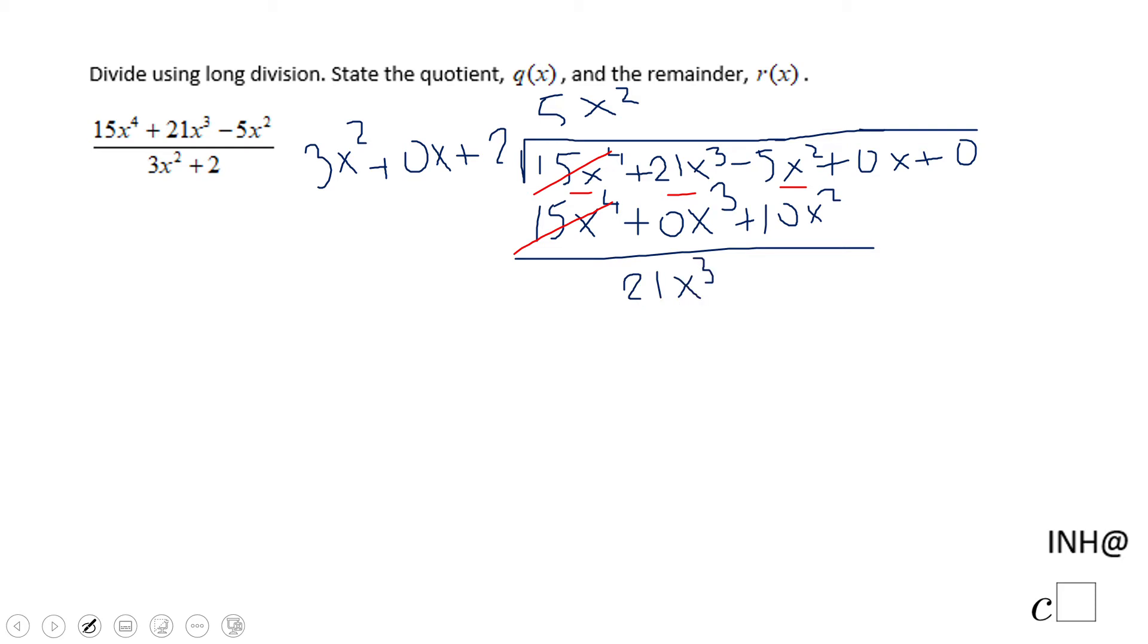And here we have negative 5x squared minus positive 10x squared, minus 15x squared. Then let's copy the 0x. And you can copy the 0 also if you want.